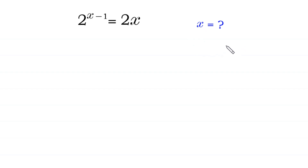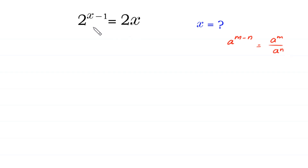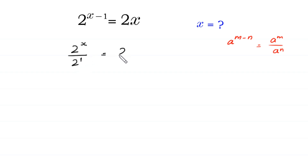According to this property of exponents, a to the power m minus n is equal to a to the power m over a to the power n. We can write 2 to the power x minus 1 as 2 to the power x over 2 to the power 1, which is equal to 2 times x.